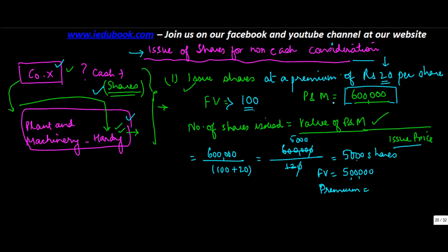And what will be the premium? It will be 20 into 5,000. 5,000, which is the number of shares issued, into 20 equals 1 lakh. So what will be the accounting entry? You're receiving plant and machinery, so you debit plant and machinery, credit to share capital.